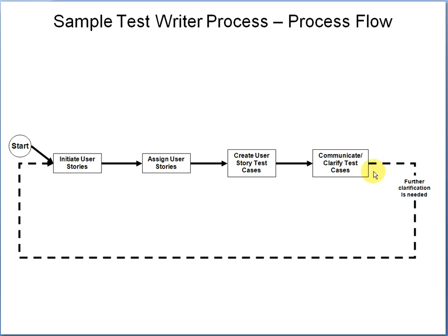Over here is a dashed flow line, and that is a conditional flow line. Notice the condition is labeled right here: 'Further clarification is needed.' This is just a sample process flow, so don't really expect it to make perfect sense in a real world situation — it's just for demonstration purposes. So the first layer of the Integrated Process Modeling Technique is the process flow that we're looking at right here.